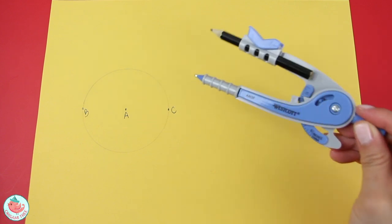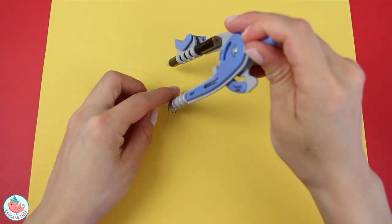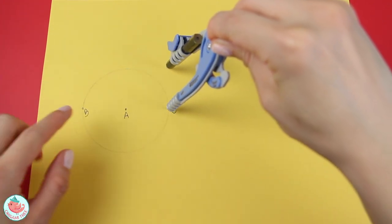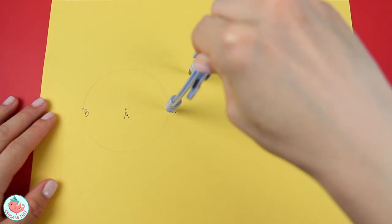After that, you want to draw a second circle right next to the first circle, and you're going to use center point C to draw this second circle. So I'm going to place the compass at point C and draw in the second circle.